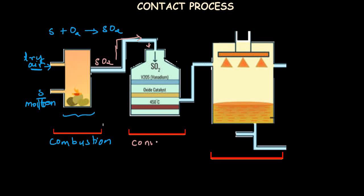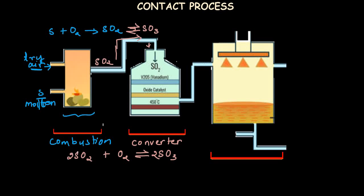The next compartment is called the converter, where sulfur dioxide is converted to sulfur trioxide. This is a very important reaction because it is an equilibrium reaction. Sulfur dioxide is further oxidized to sulfur trioxide: 2SO₂ + O₂ ⇌ 2SO₃. Air is also passed into the converter to supply the oxygen needed.